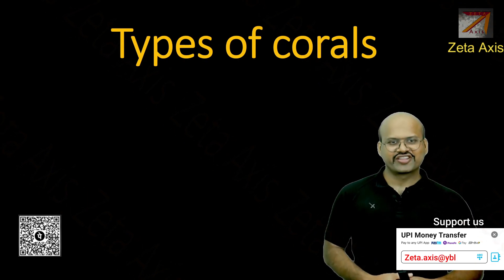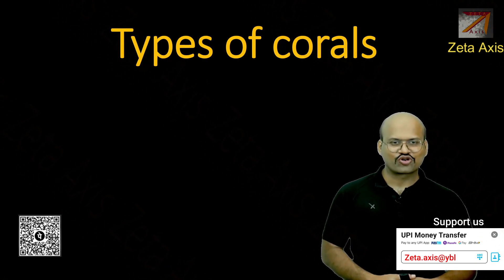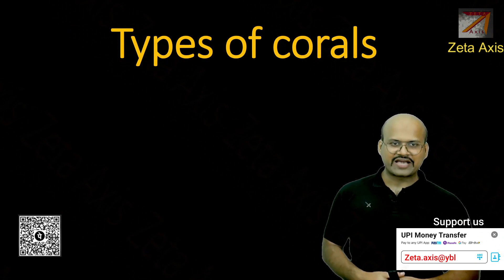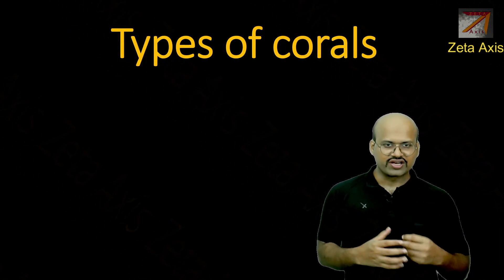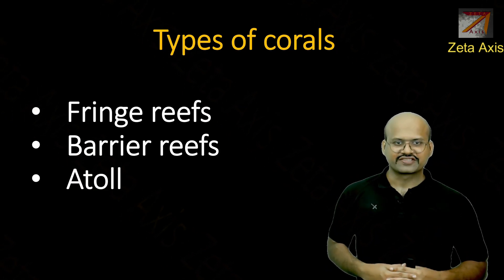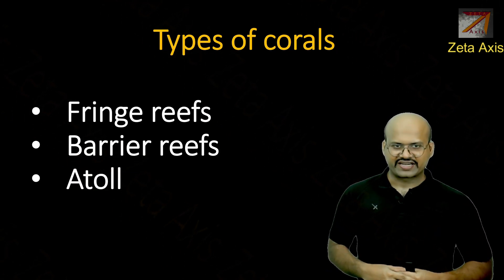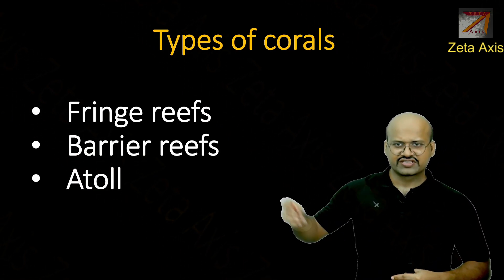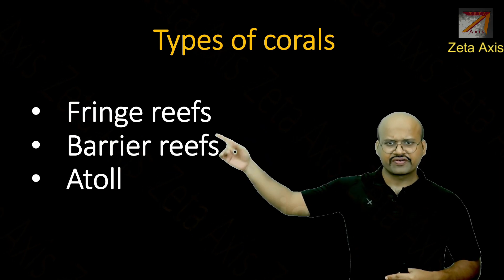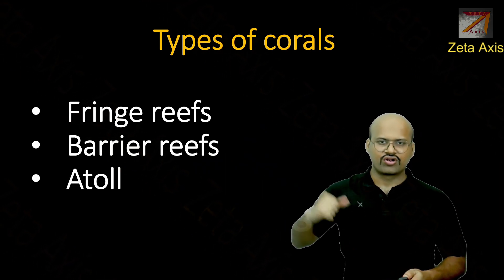Hello friends, welcome to another video of Zeta Axis. Today we are going to see different types of coral reefs. Coral reefs can be classified into three major categories: fringe reef, barrier reef, and atoll.